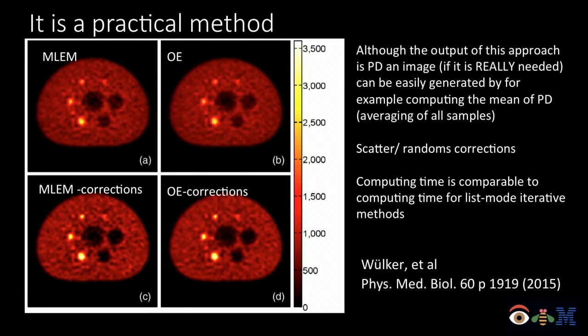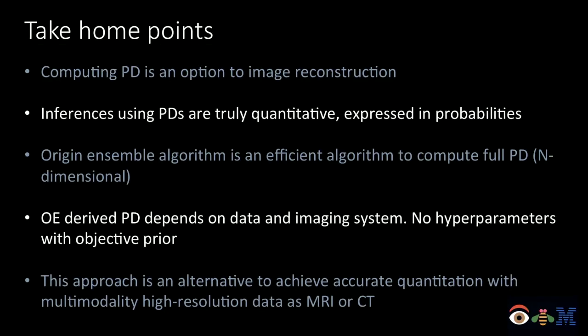We can also implement all the standard corrections in this algorithm, though because the algorithm is fundamentally different, those corrections must also be implemented differently — but it is possible. One thing worth noting: unlike ML-EM and other likelihood-based algorithms where we explicitly maximize fidelity to the data, this algorithm implicitly handles data agreement because everything is done in the image domain.